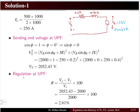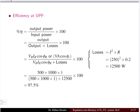The voltage regulation at unity power factor is calculated as the sending end voltage minus the receiving end voltage, divided by the receiving end voltage as the base. The sending end voltage we computed is 2052.43 V and the receiving end voltage is 2 kV, giving a regulation of 2.61%.